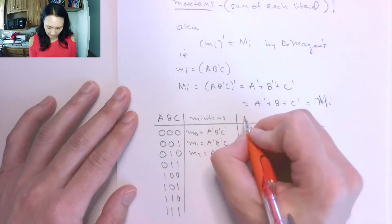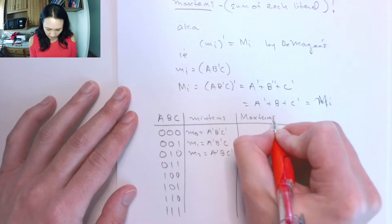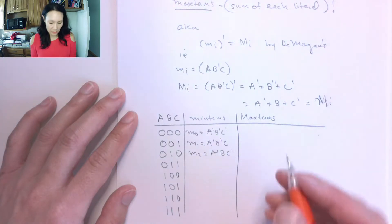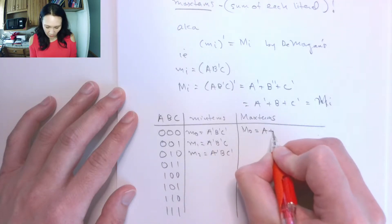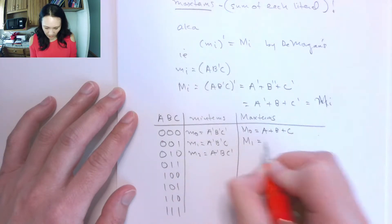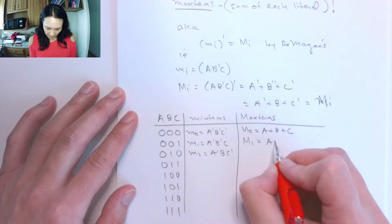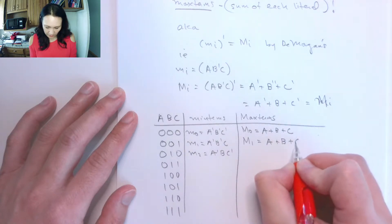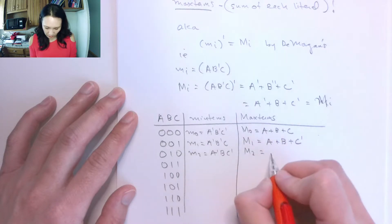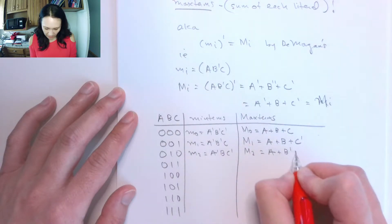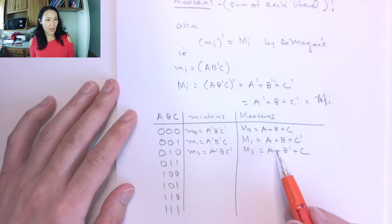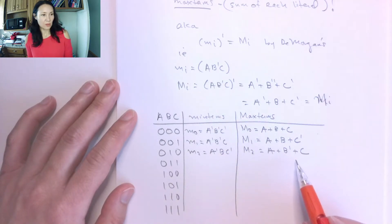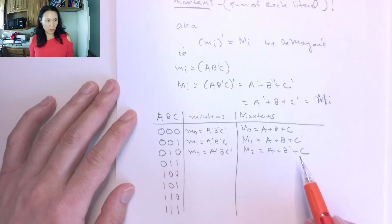The max terms are given by applying DeMorgan's to all the min terms. So max term 0 is a or b or c', max term 1 is a or b or c, max term 2 is a or b' or c'. Wherever you see a complement on the min term, you have no complement on the max term, and wherever you see an AND, you change it to an OR.